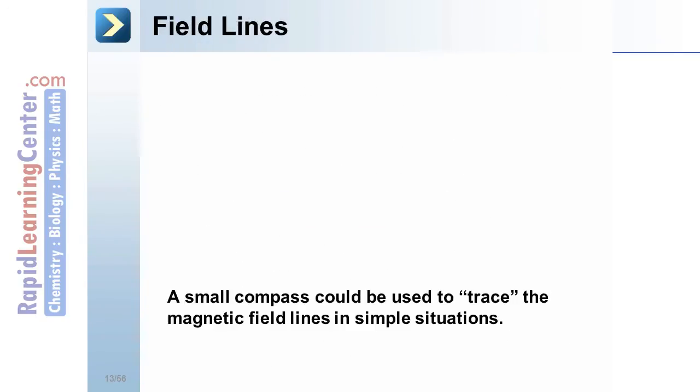Field lines. A small compass could be used to trace the magnetic field lines in simple situations. This is a common laboratory experience. Here's a magnet.